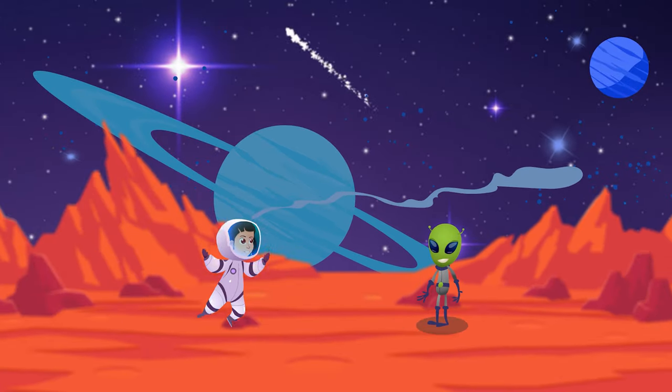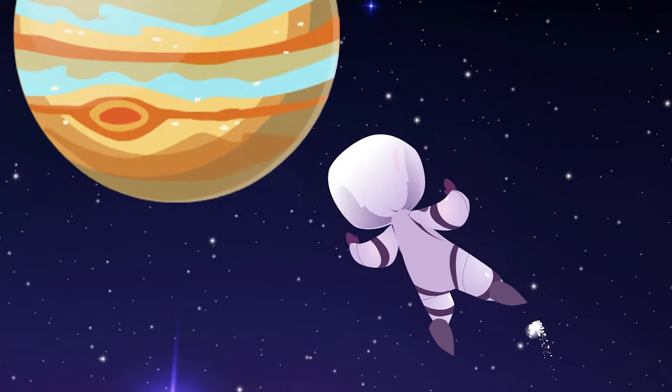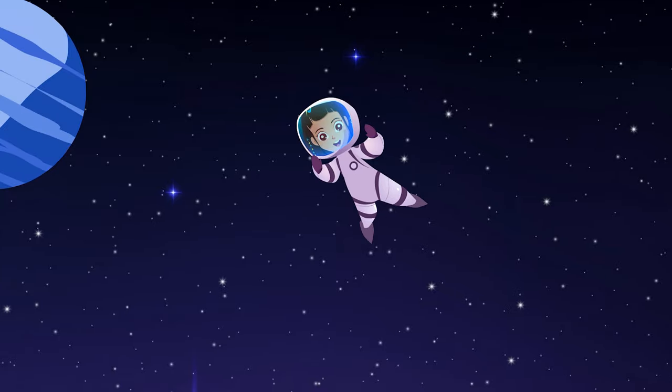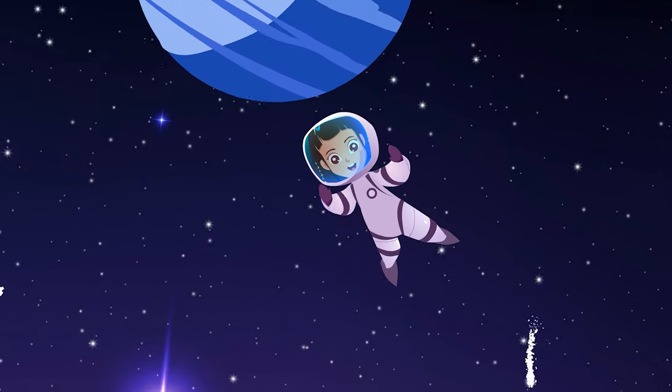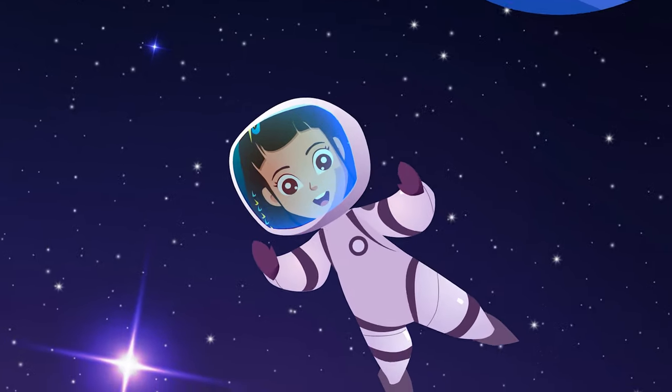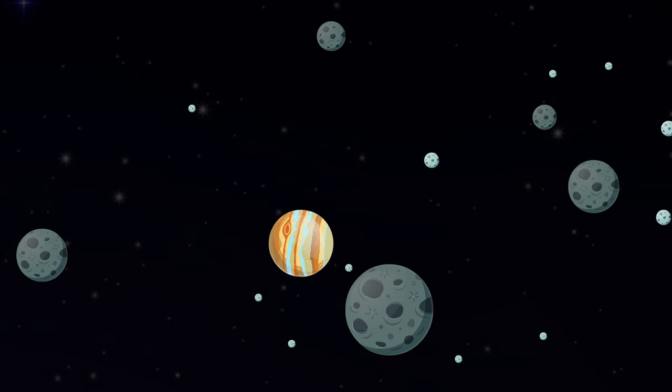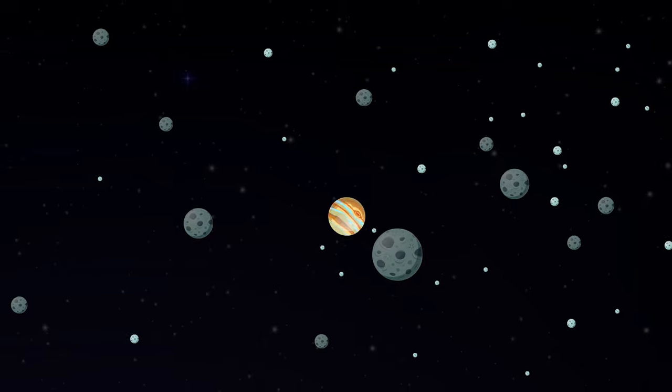Jupiter! It's a big, big planet made of gases, take a closer look. It has 67 moons, it's incredible.